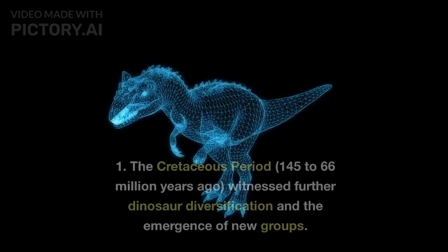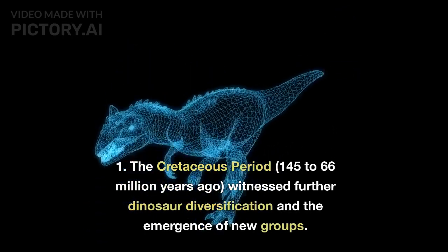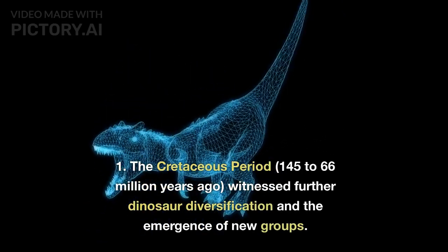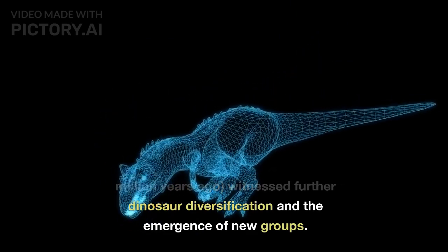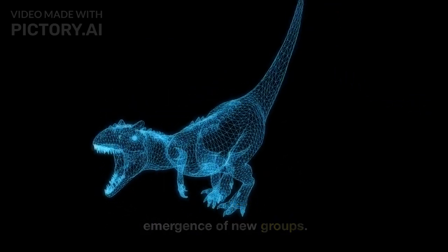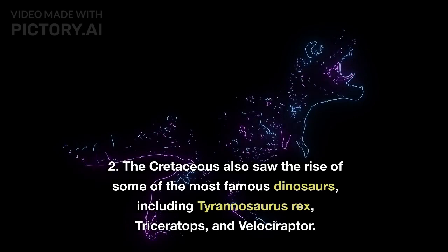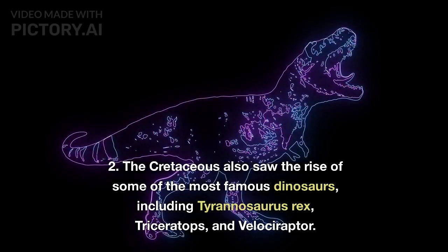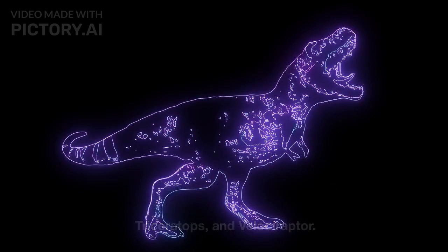Cretaceous Period: the last chapter. The Cretaceous Period, 145–66 million years ago, witnessed further dinosaur diversification and the emergence of new groups. The Cretaceous also saw the rise of some of the most famous dinosaurs, including Tyrannosaurus rex, Triceratops, and Velociraptor.